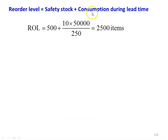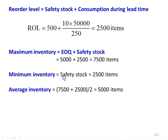Reorder level equals safety stock plus consumption during lead time. Safety stock is given as 500 units, and lead time consumption = 10 × 50,000 / 250 = 2,000 units. So reorder level = 500 + 2,000 = 2,500 items — meaning when stock reaches 2,500 items, place a new order. Maximum inventory = EOQ + safety stock = 5,000 + 2,500 = 7,500 items. Minimum inventory = safety stock = 2,500 items. Average inventory = (7,500 + 2,500) / 2 = 5,000 items.